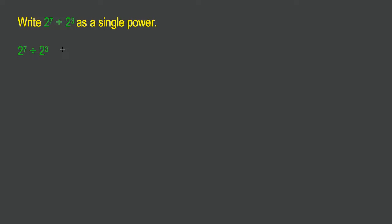This math talk discusses the second of our exponent rules, and it begins with the question: write 2 to the exponent 7 divided by 2 to the exponent 3 as a single power.